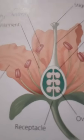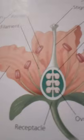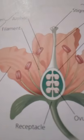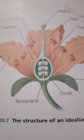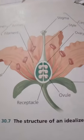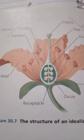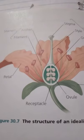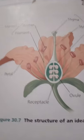A flower is a specialized structure that can have up to four rings of modified leaves called floral organs: sepals, petals, stamens, and carpels. Starting at the base of the flower are the sepals, which are usually green and enclose the flower before it opens — think of a rosebud.